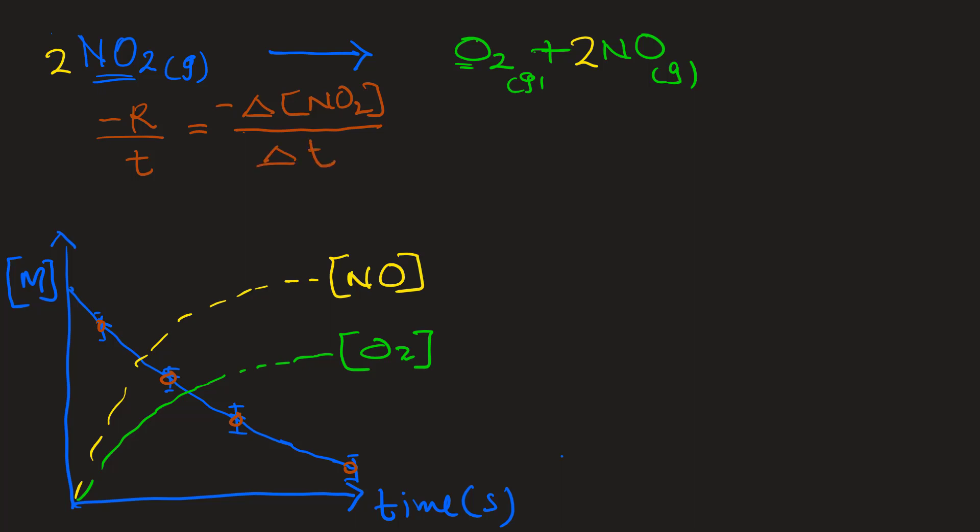Let's write the rate of reaction. In this case, negative delta NO2 over delta T. The coefficient 2 goes here at the denominator, okay?